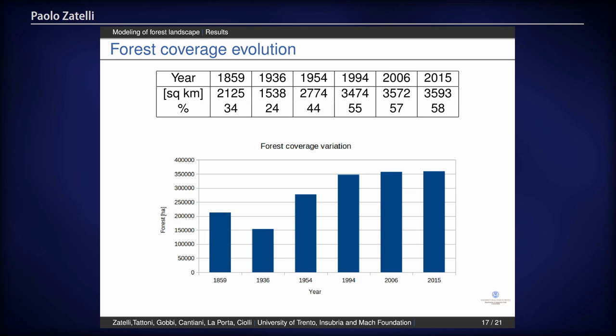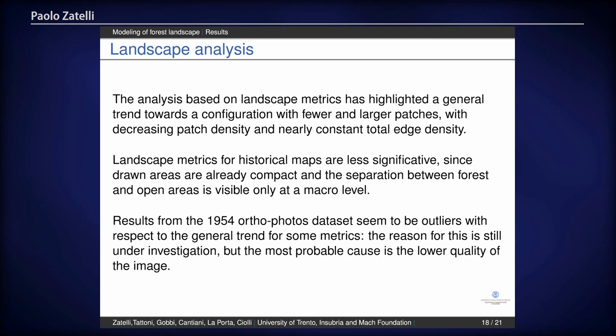You can see that there is an increase of the forest from the first year to 1994, and then you have more or less a constant value with a very small increase in recent years. Once we have all these maps, we can apply landscape analysis — evaluating metrics about the forest to understand how its function changes in time. What we see is something we expected but can now quantify: we have fewer forest areas and forest plots, but they are larger because they have merged together. The patch density obviously decreases because there are fewer but larger patches, while the edge density remains more or less the same.